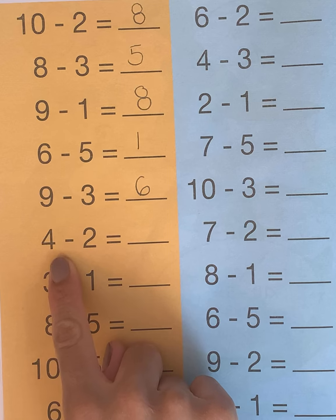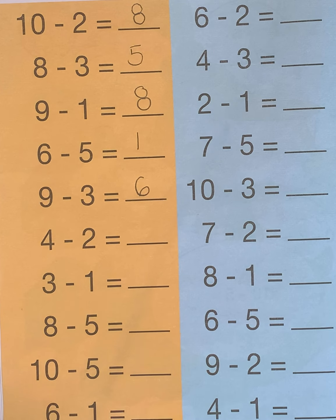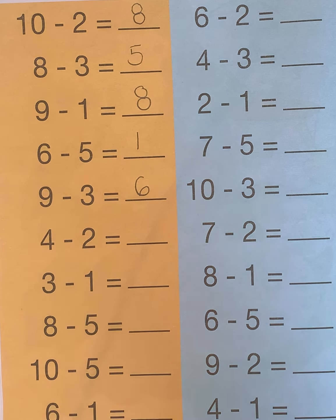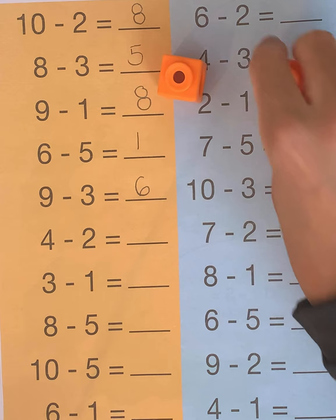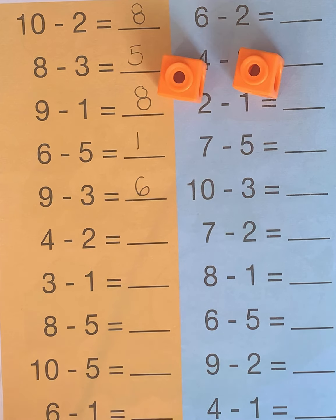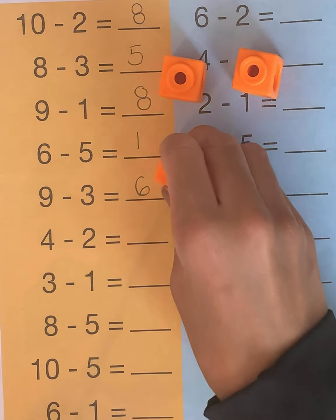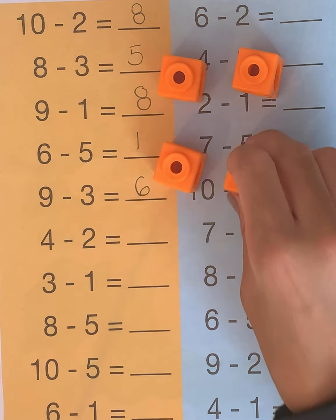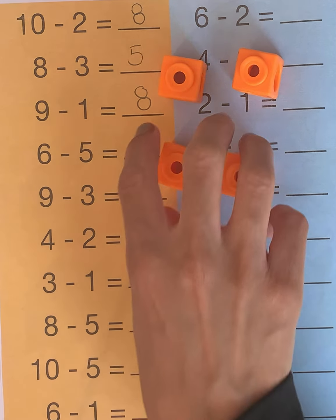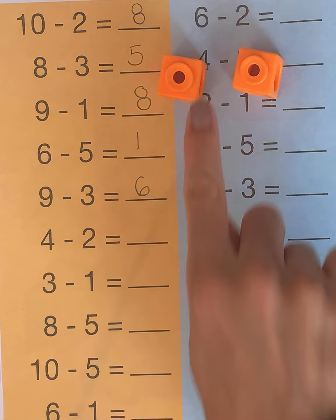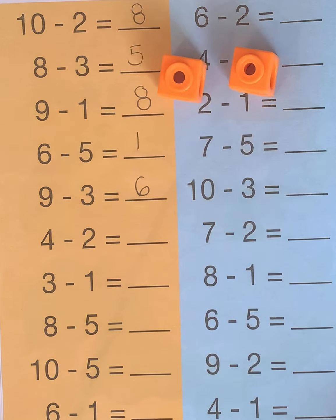Next problem is 4 minus 2. So let's start out with 4: 1, 2, 3, 4. And we want to take away 2. How many are left? 1, 2 are left.